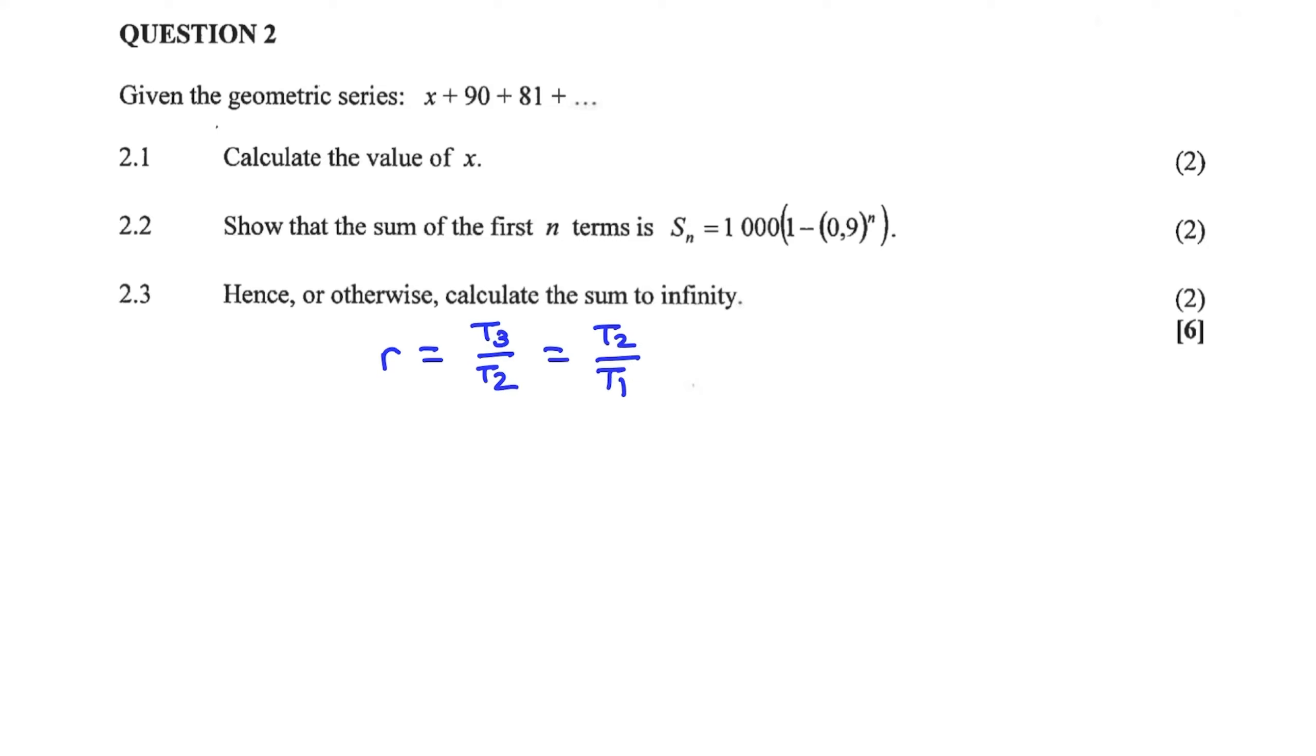And we have term 3 as 81 over term 2 equal to 90 over term 1, which is x. Now we can cross-multiply in order to get rid of the fractions. So I have 81x is equal to 8100.